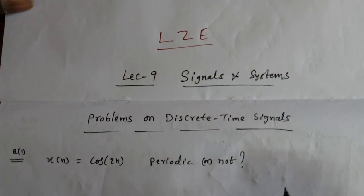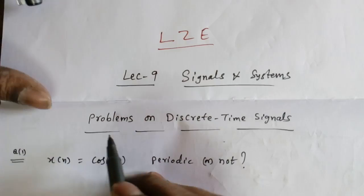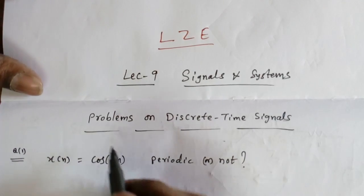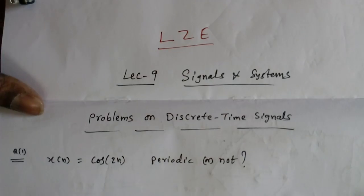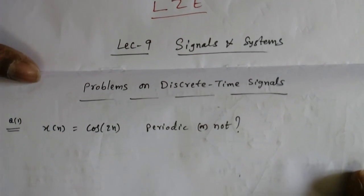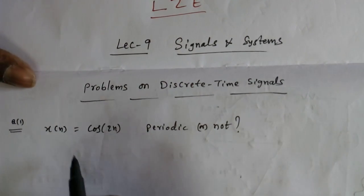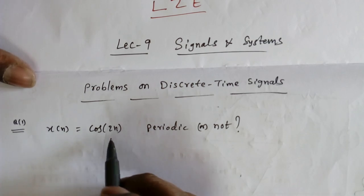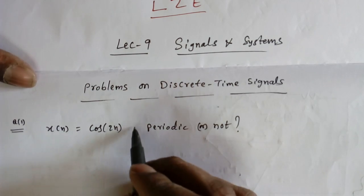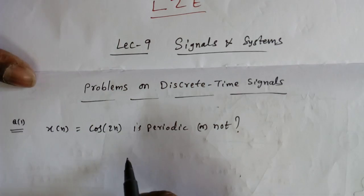This is lecture 9 in signals and systems. In this lecture, I am going to do some problems on discrete time signals. The first question is: x₁[n] = cos(2n). So is it periodic or not?